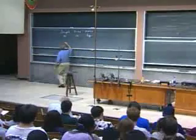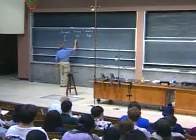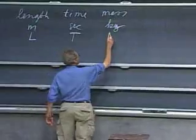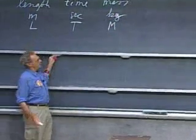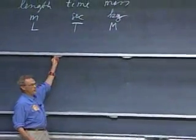I will give this the symbol capital L for length, capital T for time, and capital M for mass. All other quantities in physics can be derived from these fundamental quantities.